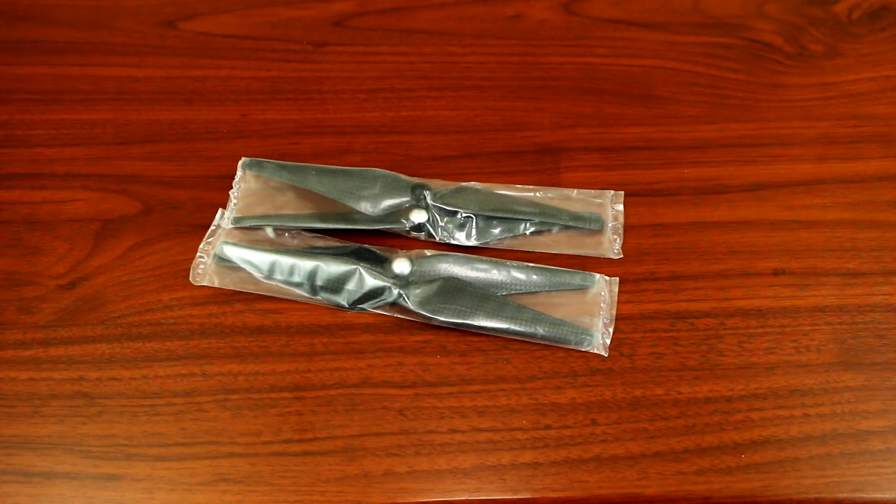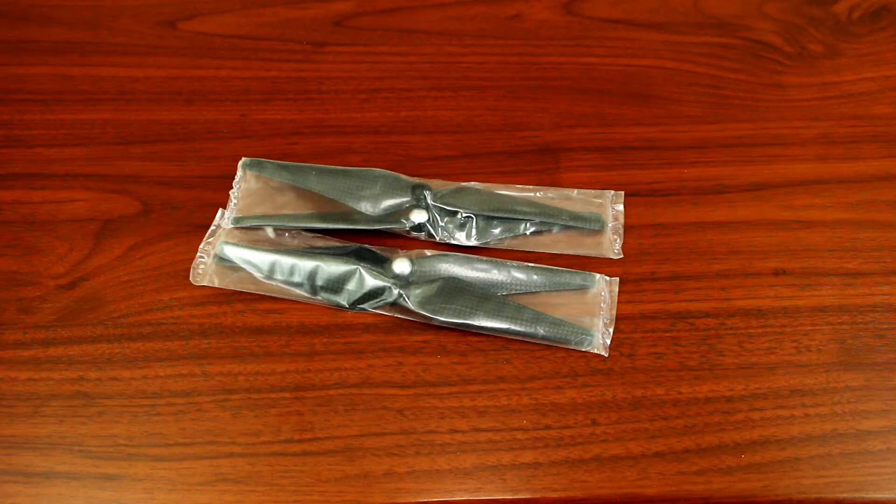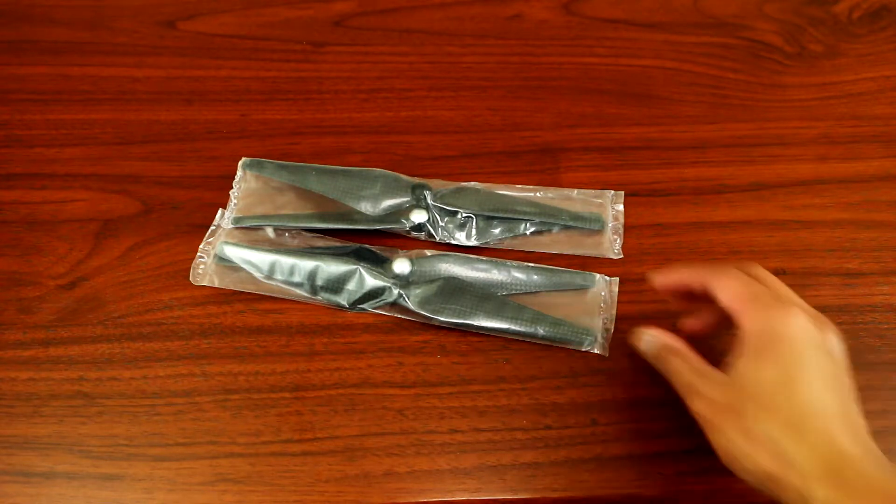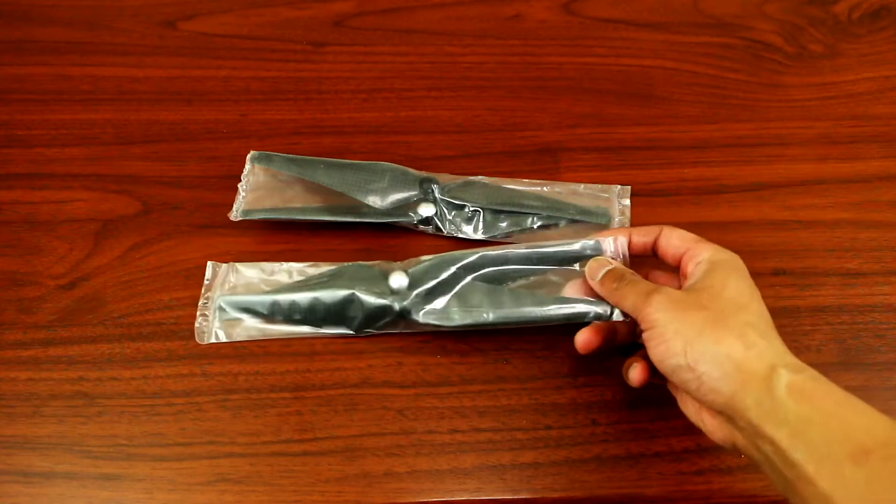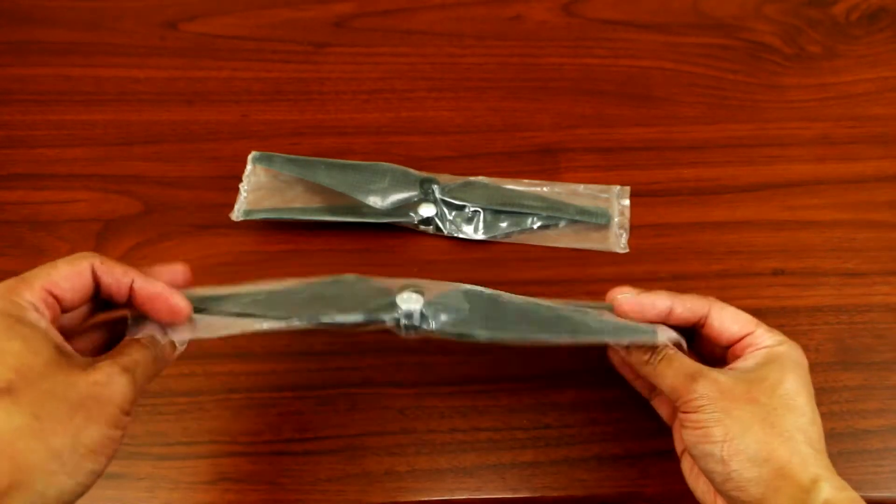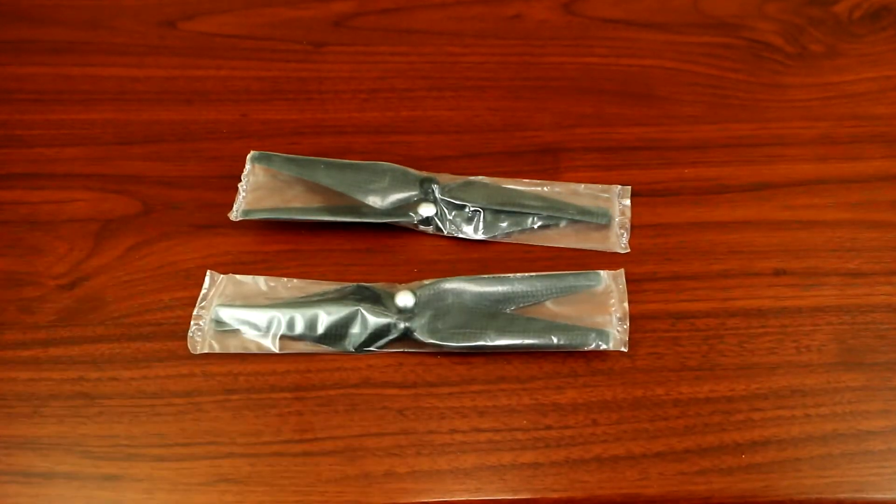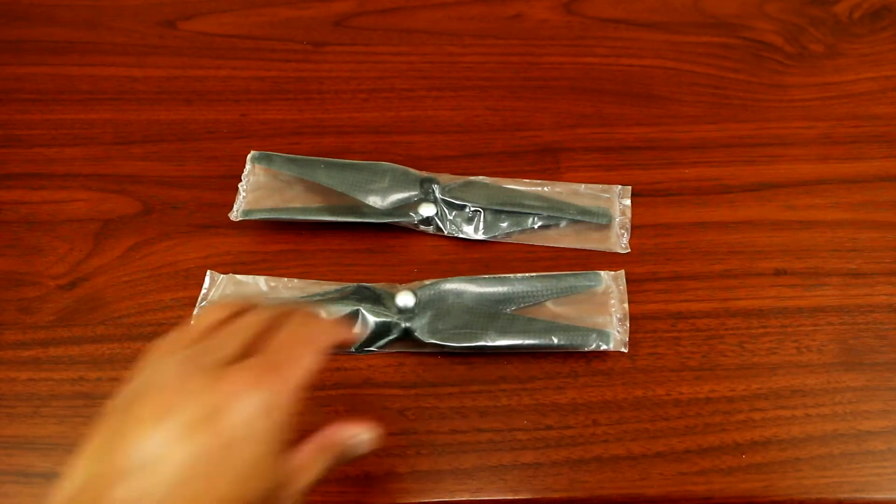Hey, what's up YouTube. Today I'll be showing you guys the carbon fiber propeller for your DJI Phantom 2. This is the self-tightening 9-inch props made of carbon fiber. Let's open it up.